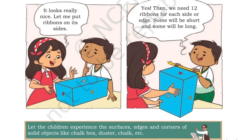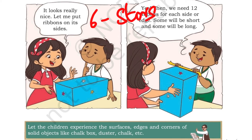A cuboid has six faces and 12 edges or sides. For faces, we have already placed six stars. She says: it looks really nice — let me put ribbons on its sides. We have 12 sides, so they are going to put a ribbon for all these sides. Yes, we need 12 ribbons for each side or edge. Some will be short and some will be long — for the length we need the longer ribbon, and for the breadth we need the shorter ribbon.